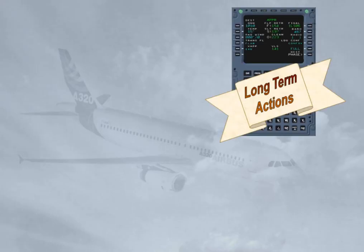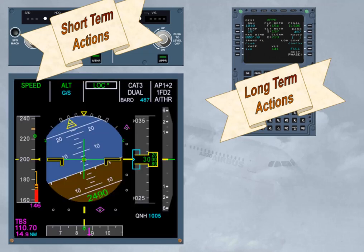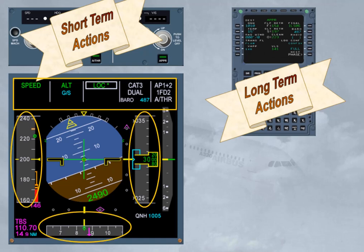Long-term actions through the MCDU and short-term actions through the FCU must be cross-checked on the flight mode enunciator, FMA, located at the top of the PFD, as well as on the various scales of the PFD. The guidance mode, engagement, arm status, and their associated guidance targets are provided on the FMA and PFD scales — Speed, Heading, Altitude. When managed by the FMGS, the targets and modes are displayed on the FMA as the flight progresses.